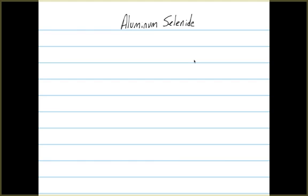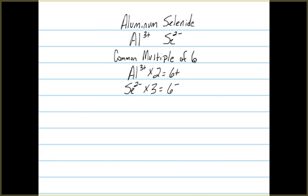Another example is aluminum selenide. This time around, we have a 3+ for the aluminum and a 2- for the selenium. Our common multiple is 6. That means we're going to have to take both of our ions and multiply them by a value. We take the aluminum times 2, that gives us a 6+. We take the selenium times 3, that gives us a 6-, so we have our charges balanced out and equal. Our formula is Al2Se3.